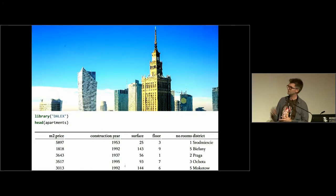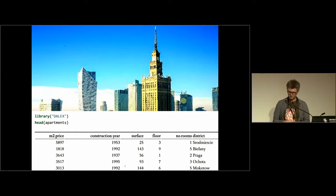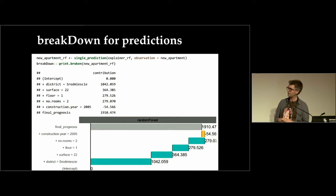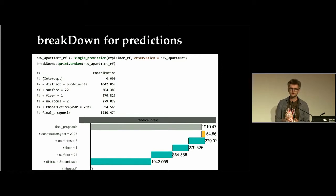So how to do this? I'll use a simple example: a dataset with six columns, one variable being price per square meter to predict, and five other variables to create a model. What you'd like is a decomposition for a single prediction — because of floor equal to one, or because of district equal to something, the final prediction is 2,000, with contribution of district being this large, contribution of surface being that large.